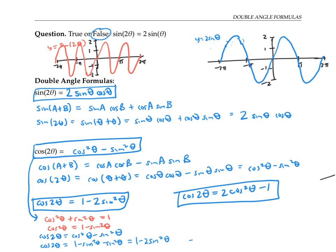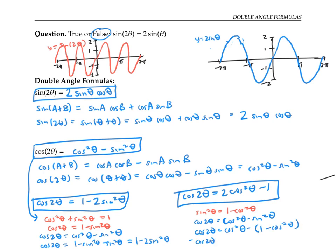Similarly, I can use the Pythagorean identity to write sine squared theta as one minus cosine squared theta. Taking the original equation and plugging in for sine squared, I get cosine of two theta equals cosine squared theta minus the quantity one minus cosine squared theta. That simplifies to two cosine squared theta minus one after distributing the negative sign and combining like terms. So I have one double angle formula for sine of two theta and three versions of the double angle formula for cosine of two theta.